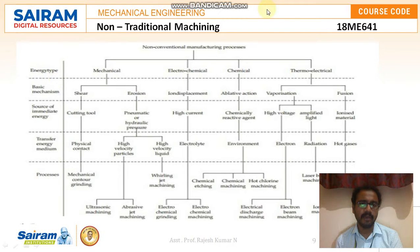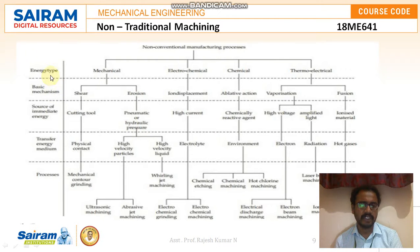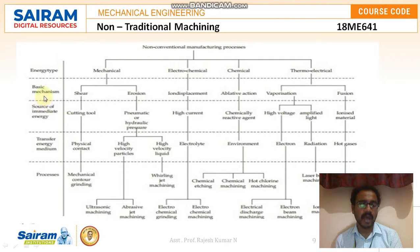Here we can see a large flow chart of non-conventional machining and manufacturing processes. Based on energy type, we can broadly classify them into mechanical, electrochemical, chemical, and thermoelectrical. Under each of these we have a few more sub-types, which we will see one by one.